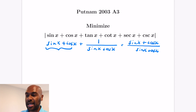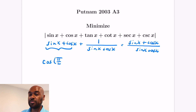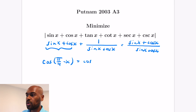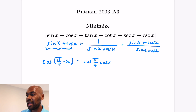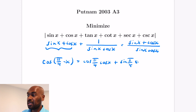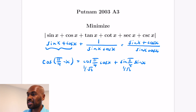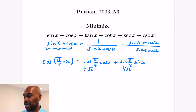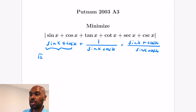We'll start with the sin x + cos x term by writing it in terms of cos(π/4 − x). Expanding cos(π/4 − x) gives cos(π/4)cos x + sin(π/4)sin x. Since sin(π/4) = cos(π/4) = 1/√2, we get that sin x + cos x = √2 · cos(π/4 − x).